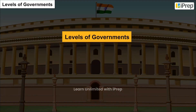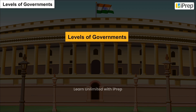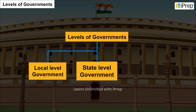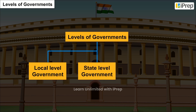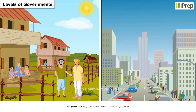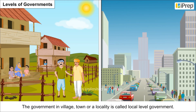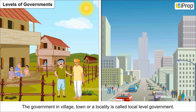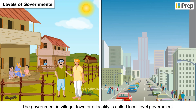Levels of Government: the local level government, the state level government, and the national level government. The government in a village, town, or locality is called local level government.